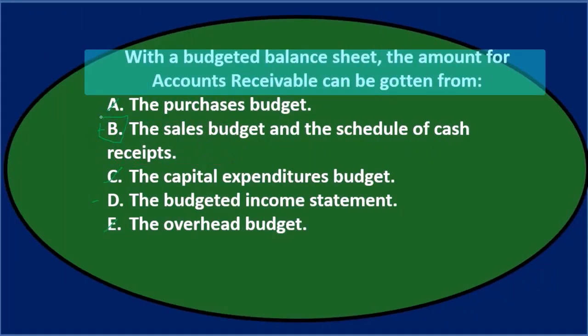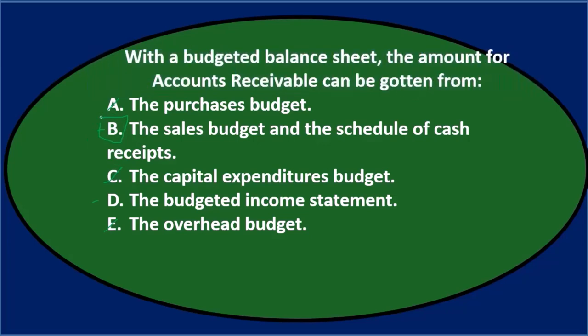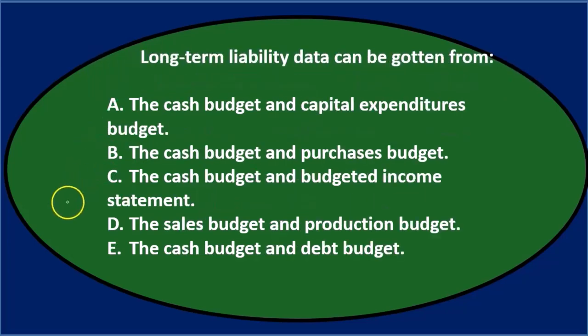One more time: with a budgeted balance sheet, the amount for accounts receivable can be gotten from B — the sales budget and the schedule of cash receipts.